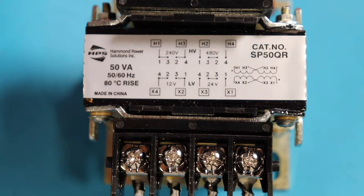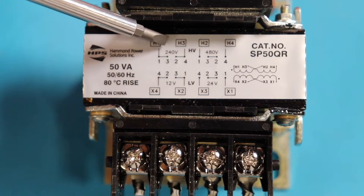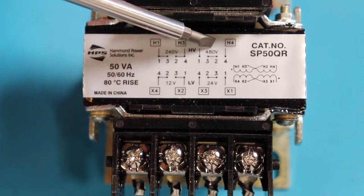So now we'll just go over the name plate. On our primary side, our input side, we have two options. We got 240 volts and 480 volts.